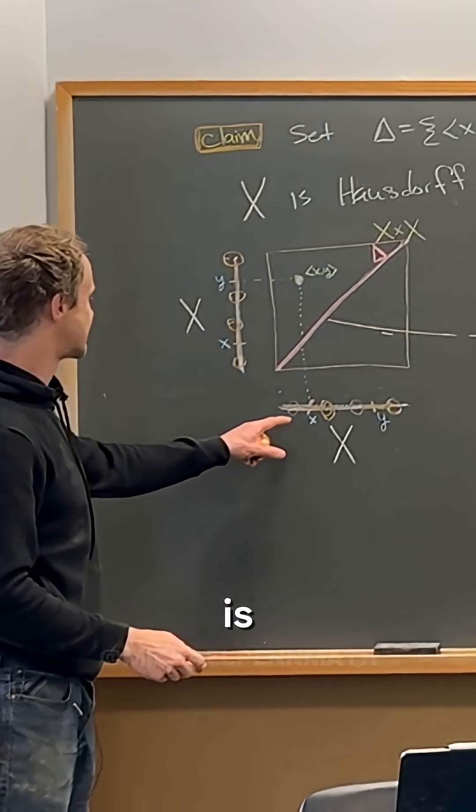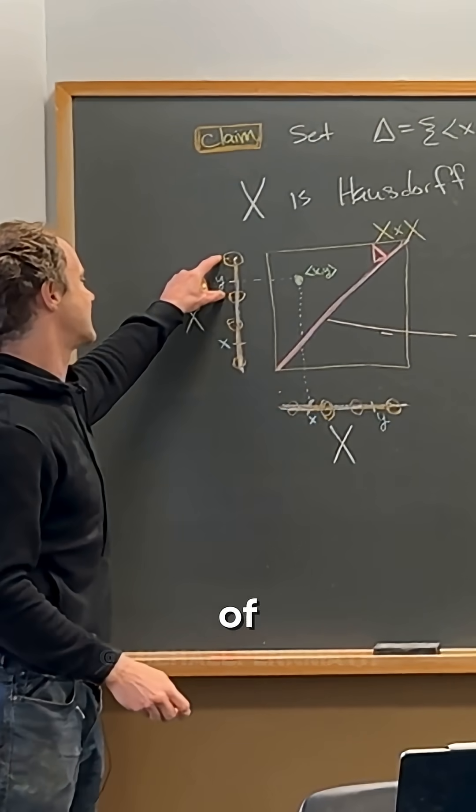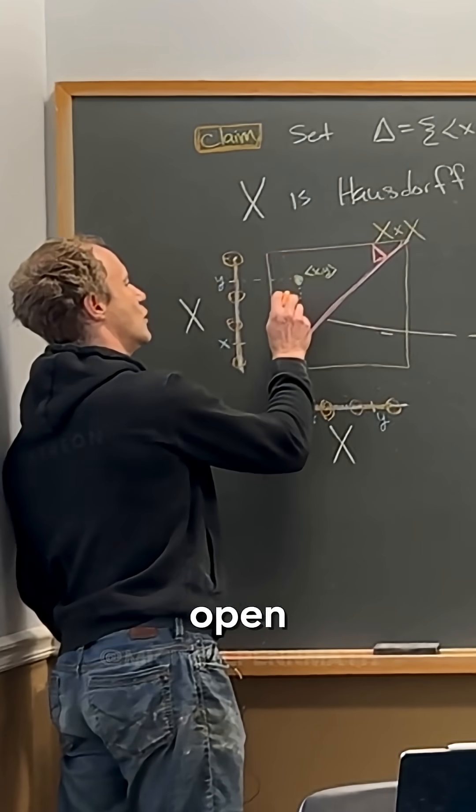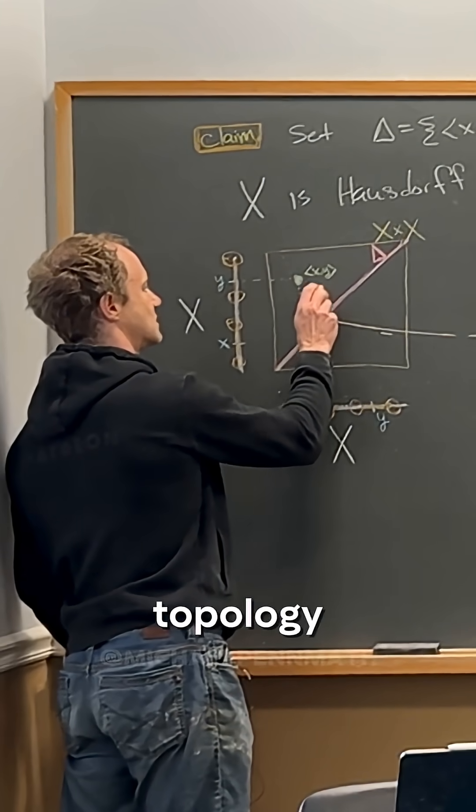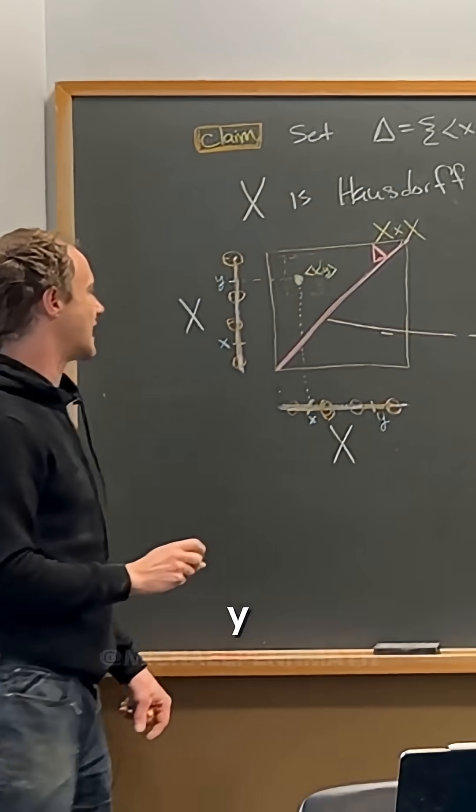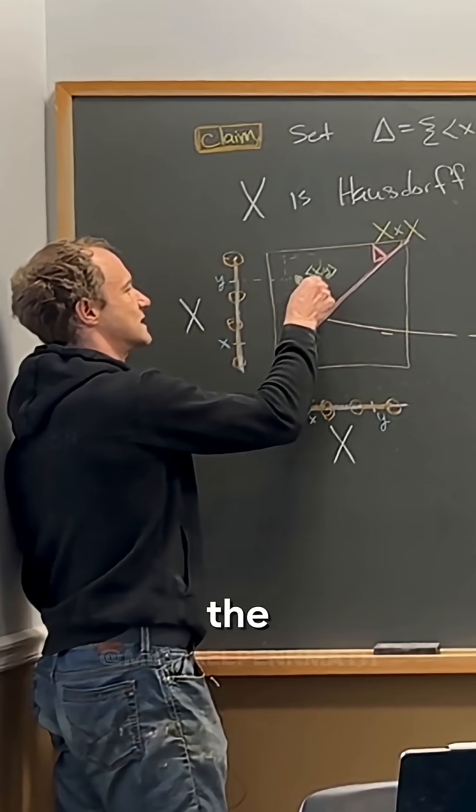And now what we'll do is take this copy of the neighborhood of x, this copy of the neighborhood of y, and look at their product, which is open in the product topology. And notice necessarily it contains (x,y) and necessarily it also misses the diagonal.